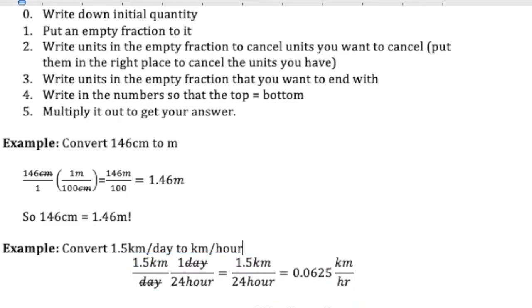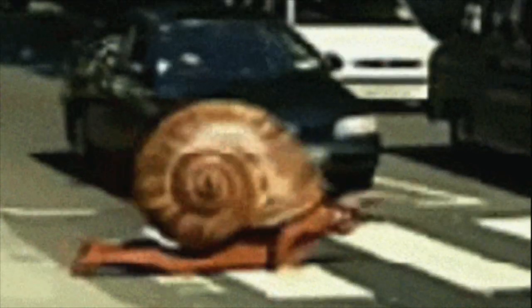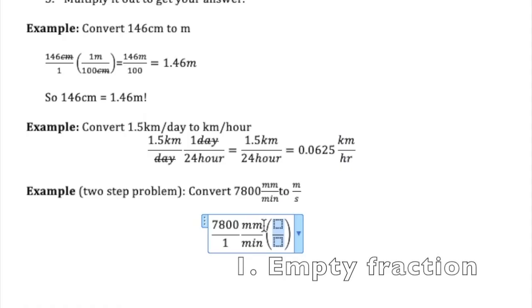Let's do one more problem. Slightly more difficult. A two-step problem. I want to change 7,800 millimeters per minute to meters per second. So let's say I'm watching like a little snail move 7,800 millimeters every minute. I want to know how many meters per second that is. So it's a harder problem, but the steps are still the same. You want to write out the initial quantity, you put in an empty fraction.